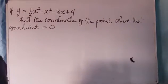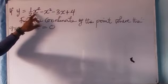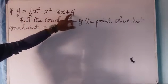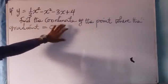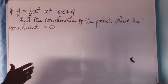I shall be taking us through calculus. There is a question on the board that you and I are to solve. If y equals 1/3 x raised to the power 3 minus x raised to the power 2 minus 3x plus 4, then find the coordinates of the point where the gradient is 0.